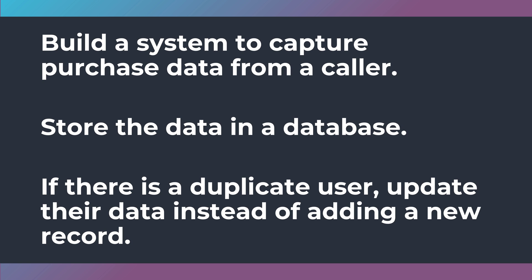If there's a duplicate user, update their data instead of adding a new record. For example, let's say I purchase a book — you take the information and store it in the database: Tim purchased a book. Then Sue purchases a t-shirt, so you put that in as a new record. Now if I purchase a t-shirt, Tim already has a record in the database, so you'd just add the t-shirt purchase into Tim's existing record rather than creating two different entries for Tim.